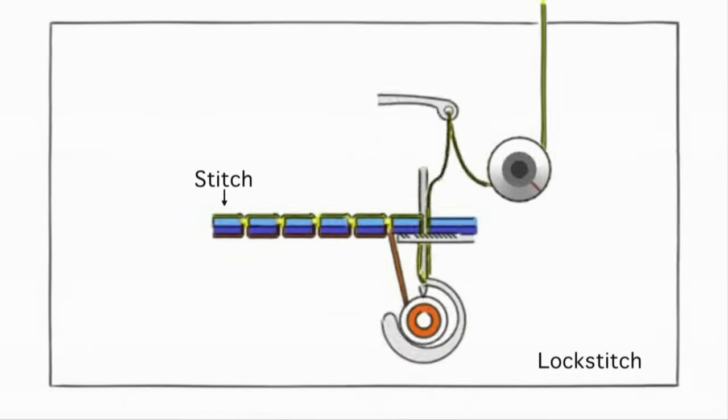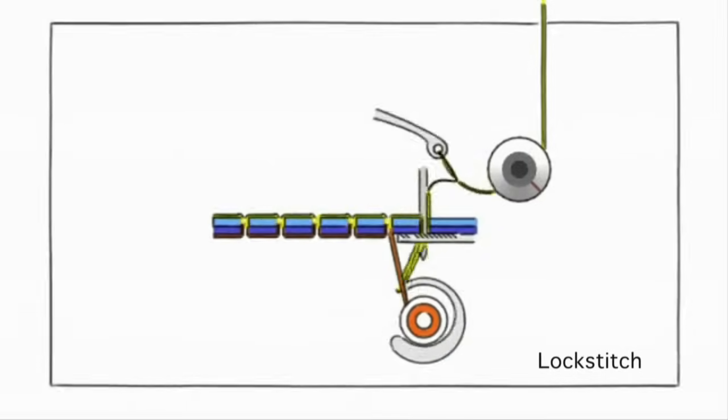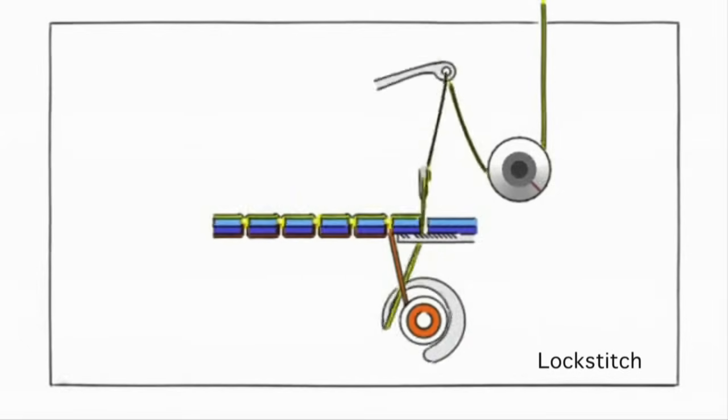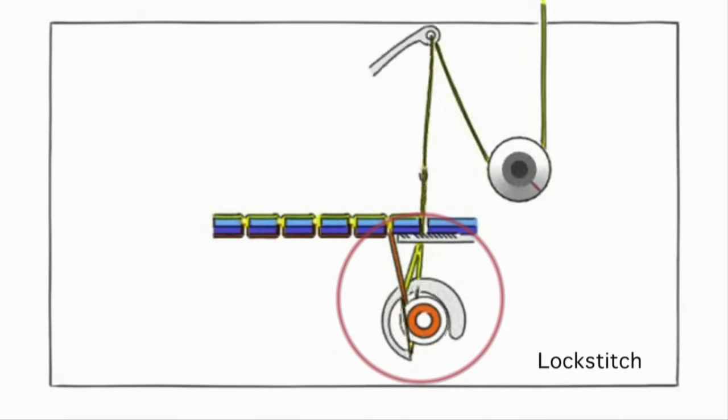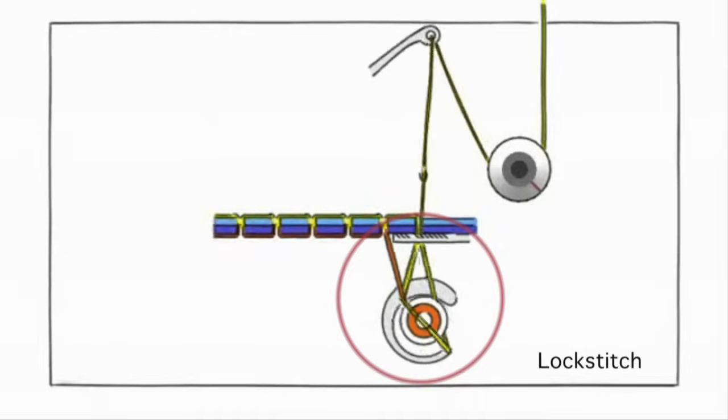Each one of these is a stitch. The take-up lever brings the thread down as the needle plunges into the fabric. This releases all the tension on the thread so that the bobbin hook can grab it and form a loop that goes around the bobbin thread.